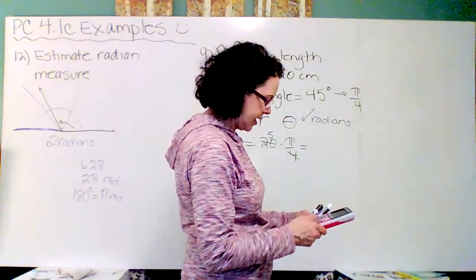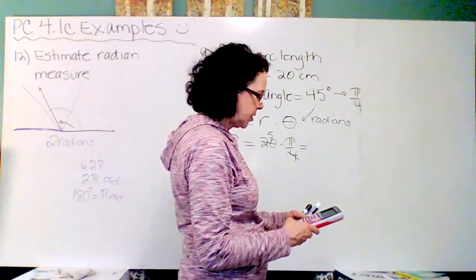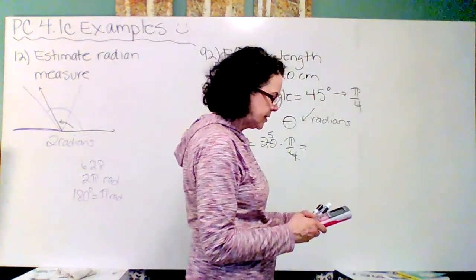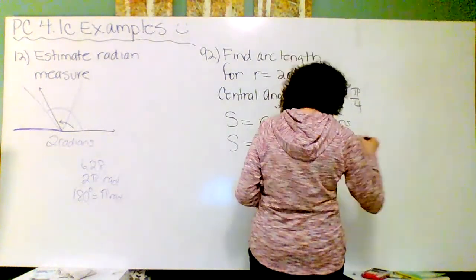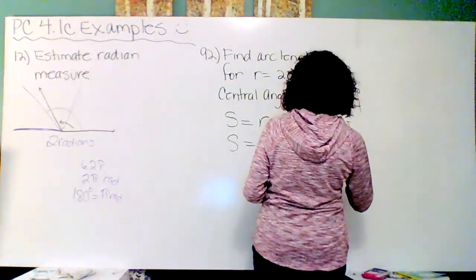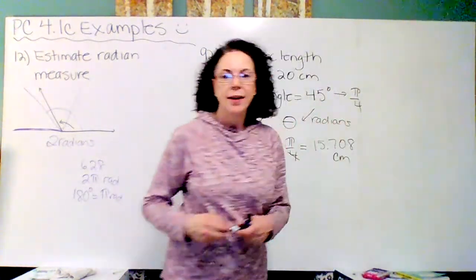And I believe they do that as a decimal. So let's go ahead and do that: 5—and where's the pi button? There it is. About the exponent. 15.708 centimeters, right? Because it's a length. There we go.